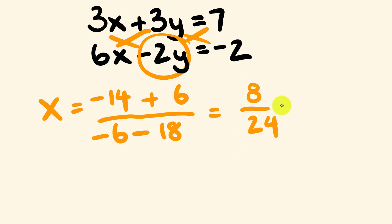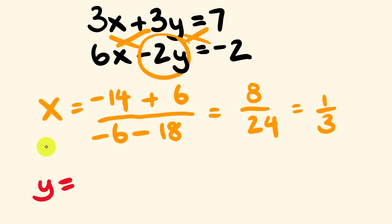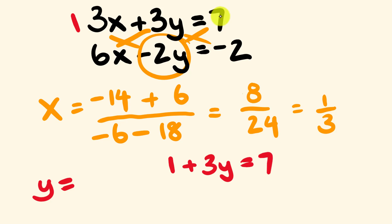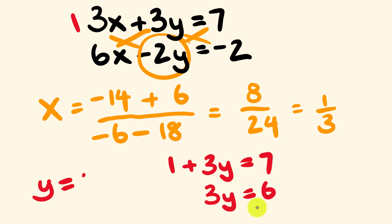So we're left with negative 8 over negative 24 — the negatives cancel, leaving us 8 over 24, which is equal to 1 over 3. So x equals one third. Substituting into the first equation: 3 times one third is 1, so we have 1 plus 3y is equal to 7. Taking 1 from both sides: 3y is equal to 6. Therefore y is equal to 6 divided by 3, which is 2. So x equals one third and y equals 2.